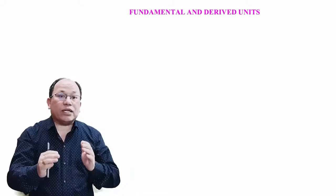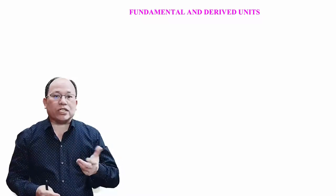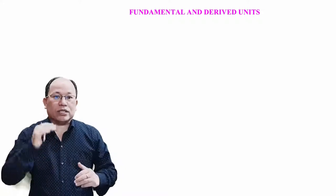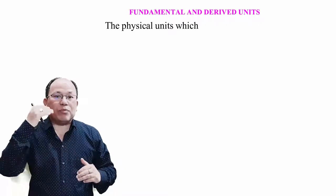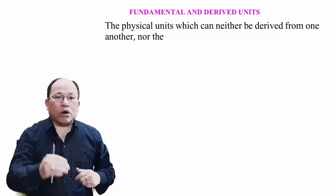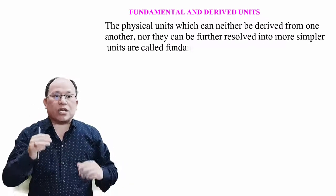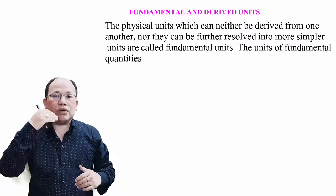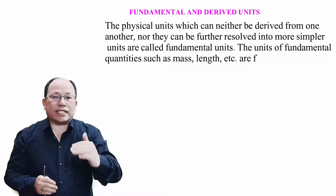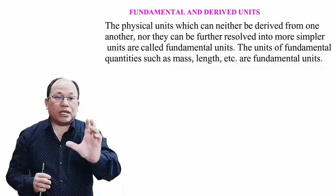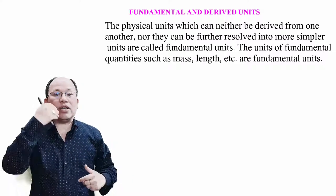After discussing the characteristics of a physical unit, let's come to the next topic: fundamental units and derived units. Fundamental units are the physical units which can neither be derived from one another, nor can they be further resolved into simpler units. The units of fundamental quantities such as mass, length, etc. are called fundamental units.